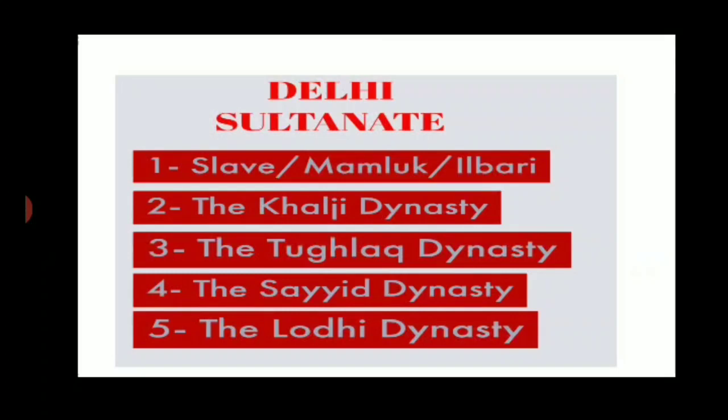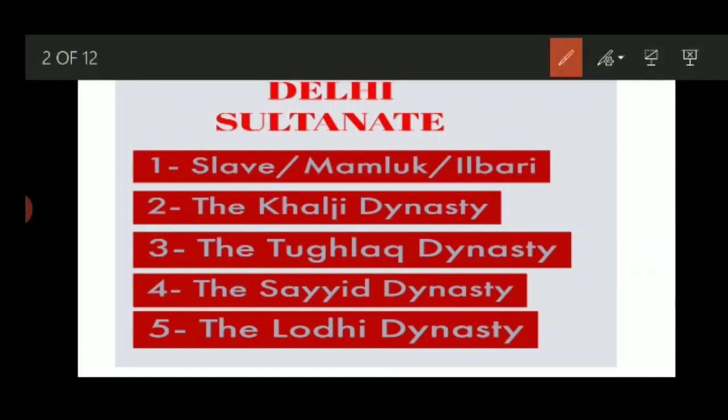The Delhi Sultanate had five major empires under it. The first was the Slave dynasty, which was also called by the name of Mamluk or Ilbari dynasty.